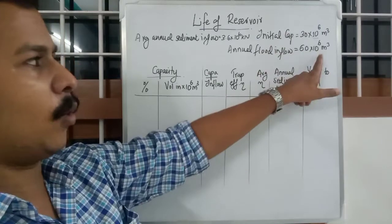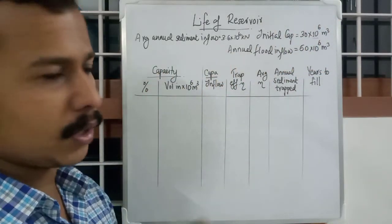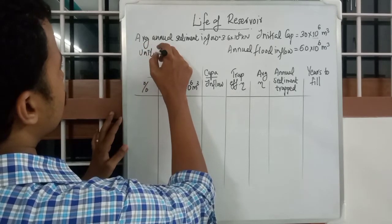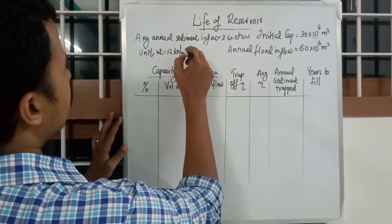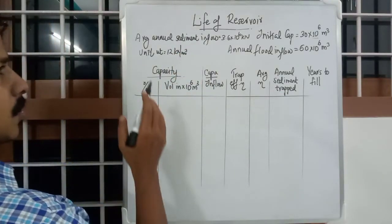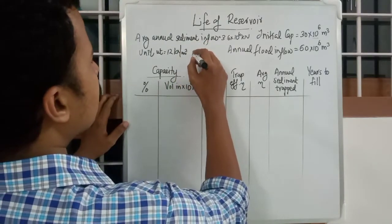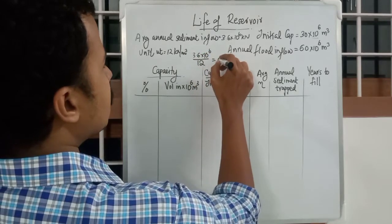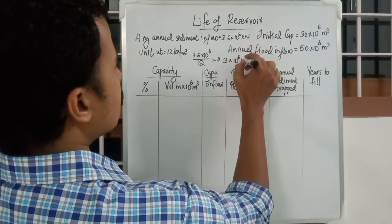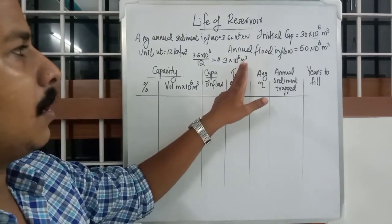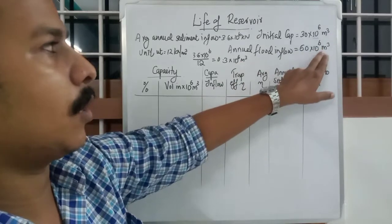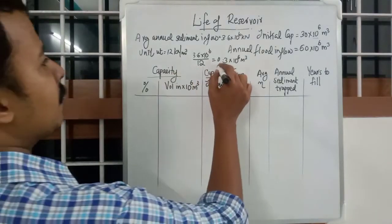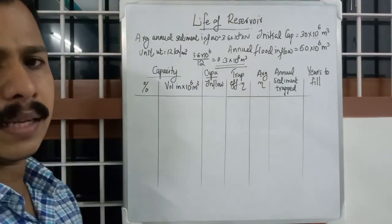Since capacity and inflow are given in volume (m³) but sediment inflow is given as weight in kilonewtons, we need to convert it to volume. We have unit weight given as 12 kilonewtons per m³. So dividing: 3.6 × 10⁶ ÷ 12 = 0.3 × 10⁶ m³. Now all three values are in million m³, so sediment inflow is 0.3 million m³.